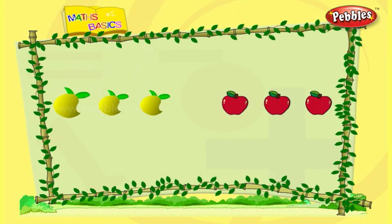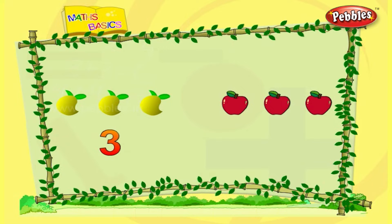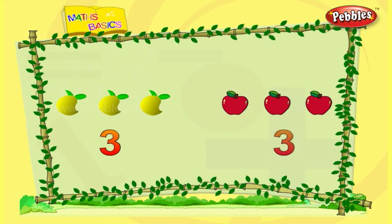One, two, three — there are three mangoes. One, two, three — there are three apples. The numbers are the same. Number three is equal to number three.